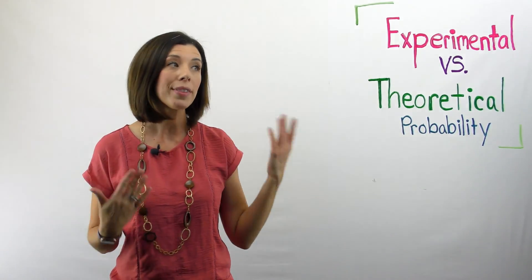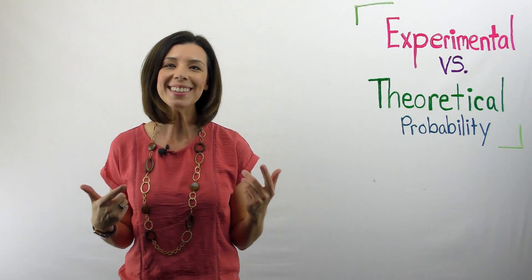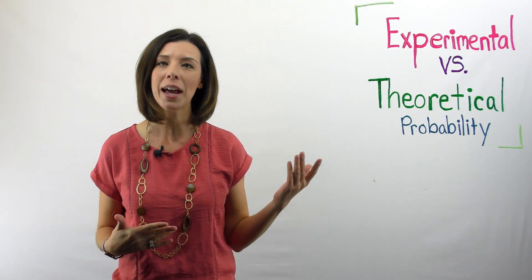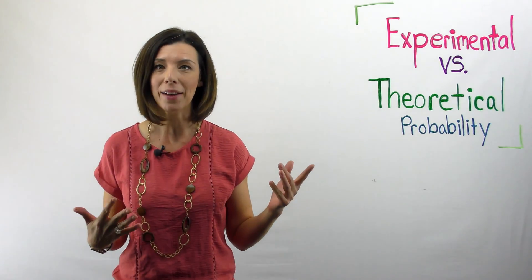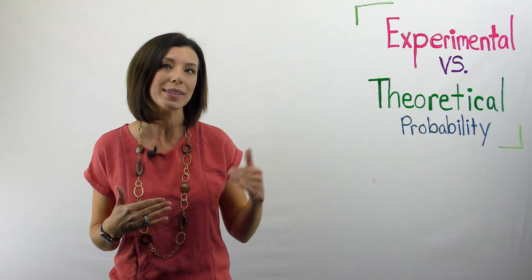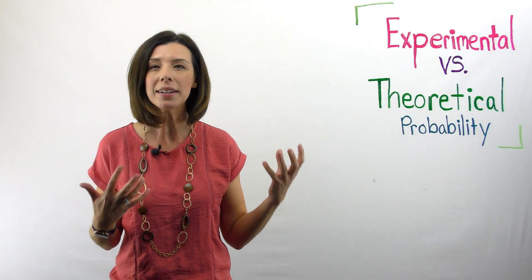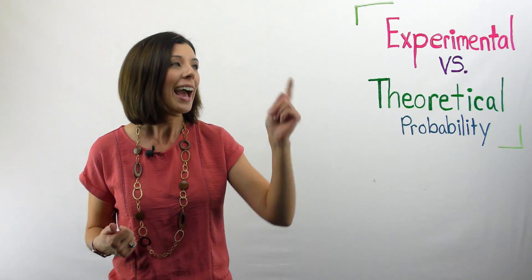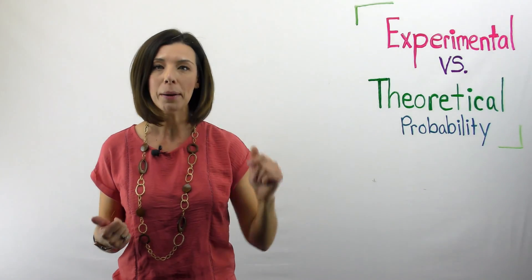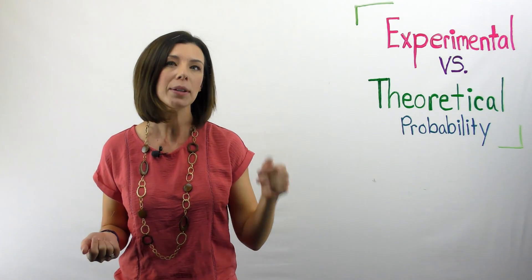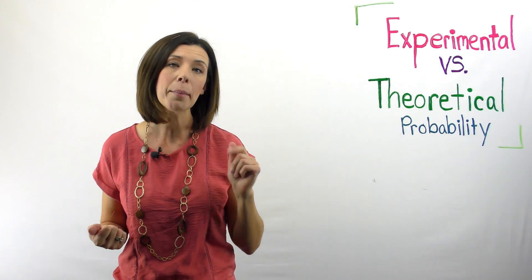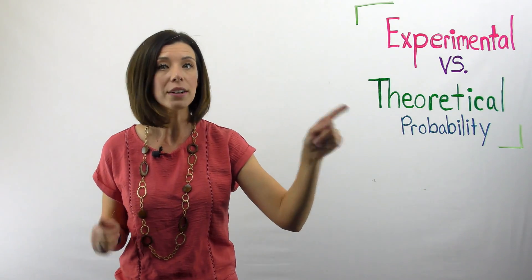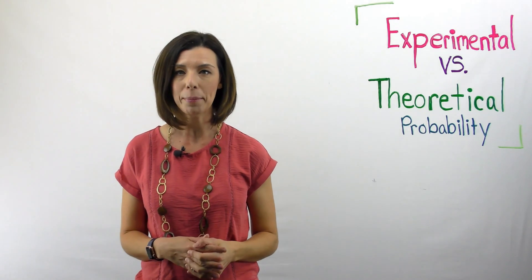Whenever I'm trying to remember the difference between the two, I like to think about what I hear in real life. You'll hear people say, 'Well, in theory, it should happen.' That is based on the math — when they say 'in theory,' they're not basing that on what's happened to them. They're saying that based on the math, this should happen. If I flip a coin twice, I should get heads. However, the experimental probability is what actually happens when I flip it. The denominator is based on the number of trials. So your experimental probability is going to look very different, almost always, than your theoretical probability.